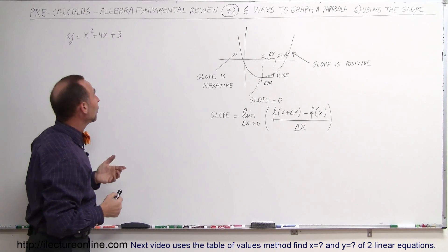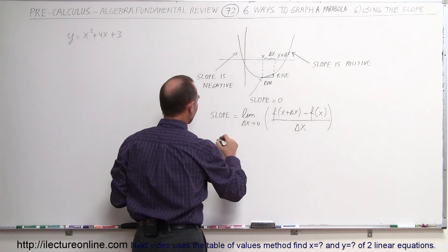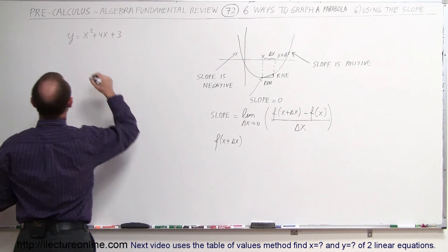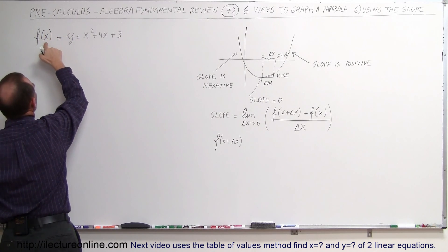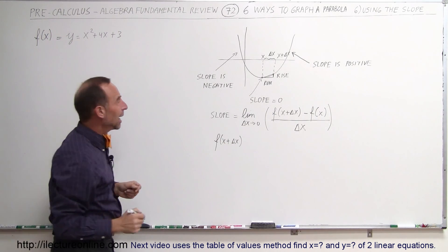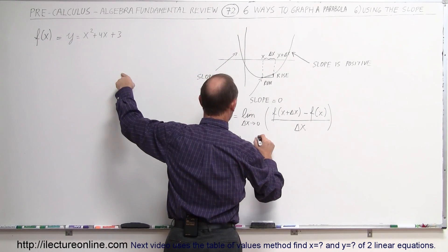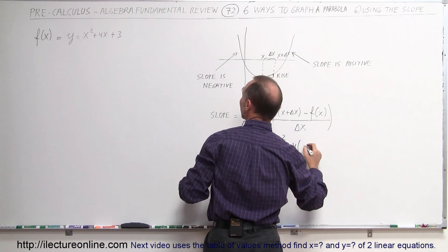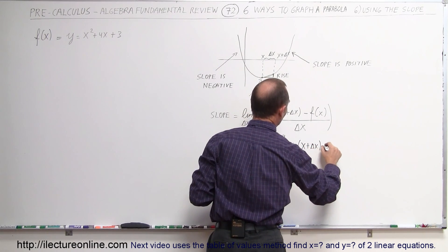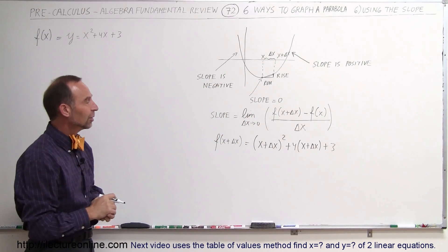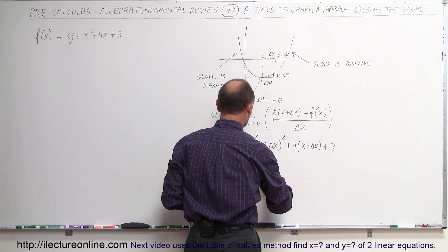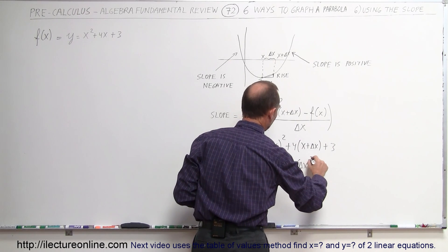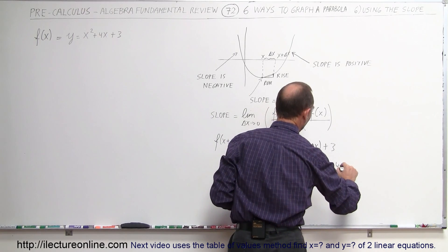What we need to do now is evaluate the function at x plus delta x. So f of x plus delta x equals the function evaluated at x plus delta x. We're going to plug in x plus delta x for every x. This equals the quantity x plus delta x squared, plus 4 times x plus delta x, plus 3. Multiplying everything out, we get x squared plus 2x delta x plus delta x squared plus 4x plus 4 delta x plus 3.